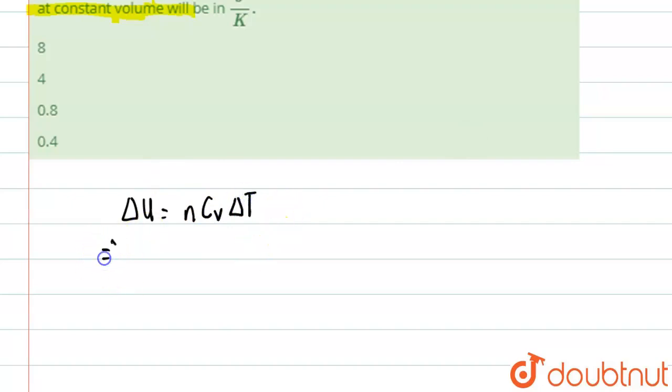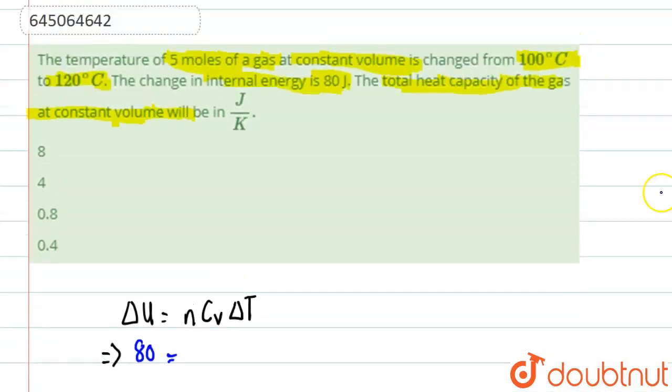Delta U is given to us as 80 joules, so we'll put the value of 80. U is internal energy, n is the number of moles, C is the specific heat, and Delta T is the change in temperature. This is in the chapter of thermodynamics.